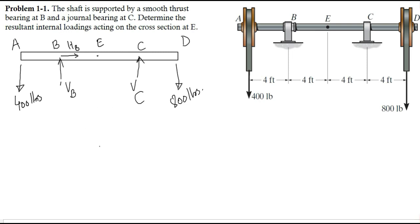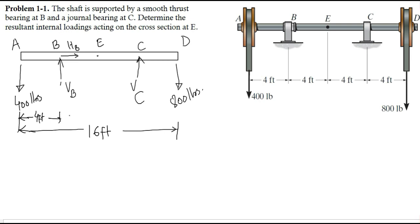In the free body diagram we also show the dimensions. The total length of the shaft is 16 feet. The distance between points A and B is 4 feet, the distance between points B and C is 8 feet, and the distance between points C and D is 4 feet.